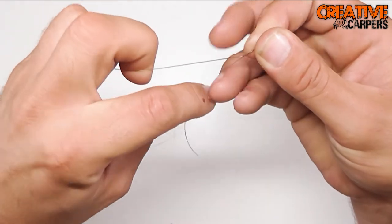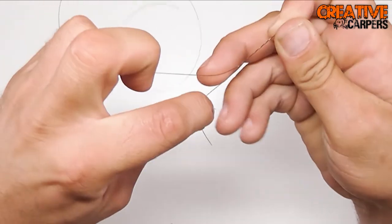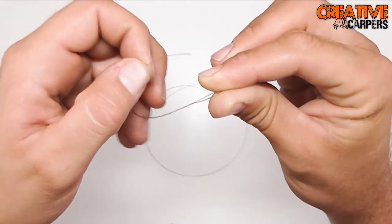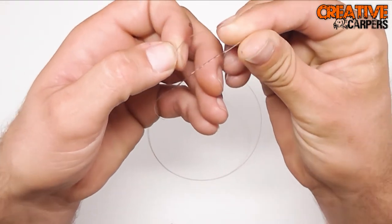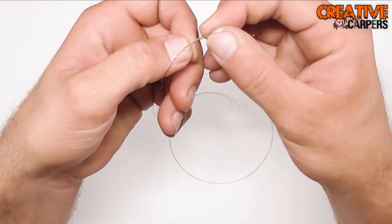Then what you want to do is just spin the line around itself five or six times, it's up to you. And then that tag end just goes back through the loop that you made at the beginning. Just goes through like that.